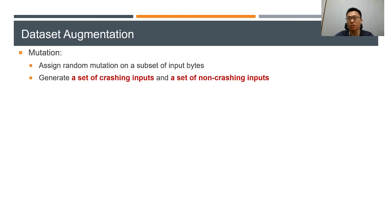Dataset augmentation is based on genetic algorithms. Given a single crashing input, we assign random mutations on a subset of the input bytes, which generates a set of crashing inputs and non-crashing inputs.